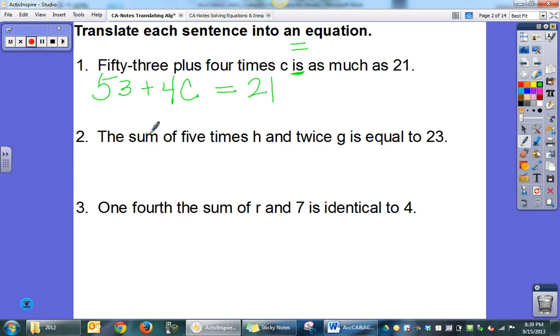The sum - addition - of 5 times h and twice g is, which is our equal sign, equal to 23. So the sum of 5 times h, 5 times h, and twice g is equal to 23.